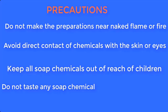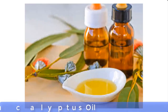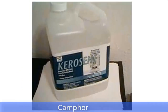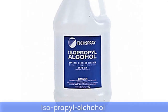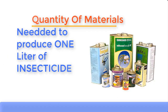Now let's go through the list of materials needed for this production. Number one is compact, number two is eucalyptus oil, number three is camphor, number four is kerosene, number five is isopropyl alcohol also known as IPA, and number six is color. Please note that the solvent used for this preparation is kerosene.